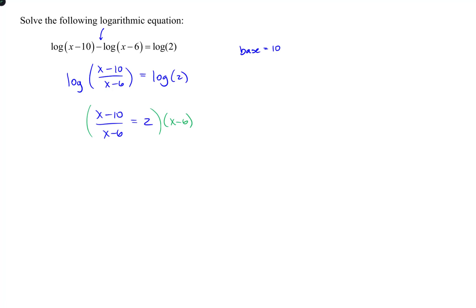Now, the x minus 6 term cancels, and that leaves x minus 10 in the numerator on the left-hand side. And then 2 times x minus 6 on the right-hand side. I can distribute that 2, and that would give me 2x minus 12.